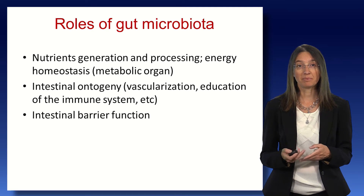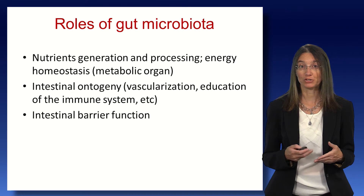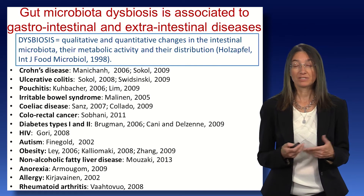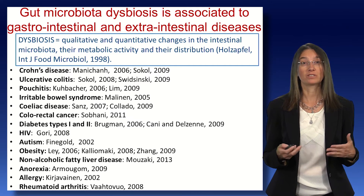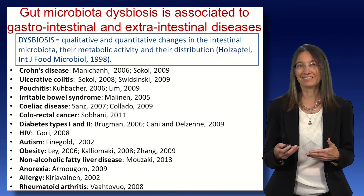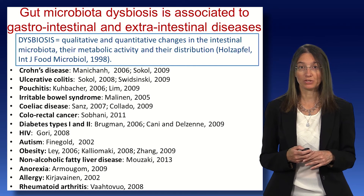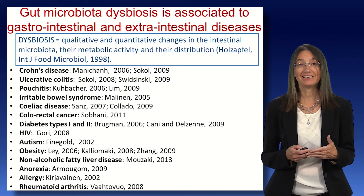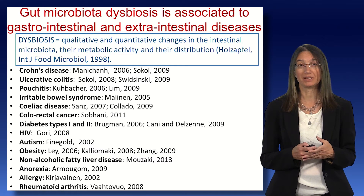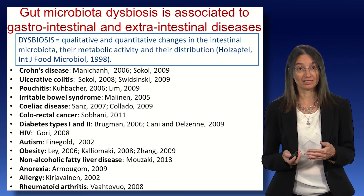The microbiota also participates in intestinal ontogeny and is a critical player in intestinal barrier function, so it's important for the intestinal defence system. A series of disease disorders and conditions have been found to be associated with an altered microbiota, or as it is referred to, a dysbiotic gut microbiota composition. All of these diseases are listed here, and this builds a rationale for using the microbiota as a therapeutic target, considering it both in terms of prevention and treatment.